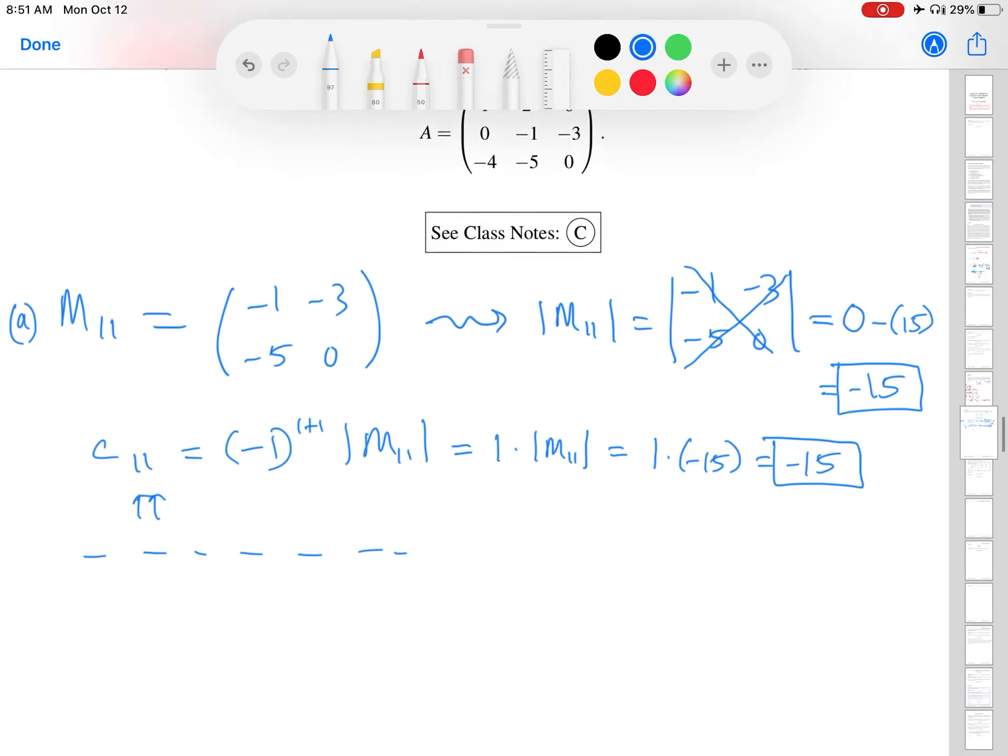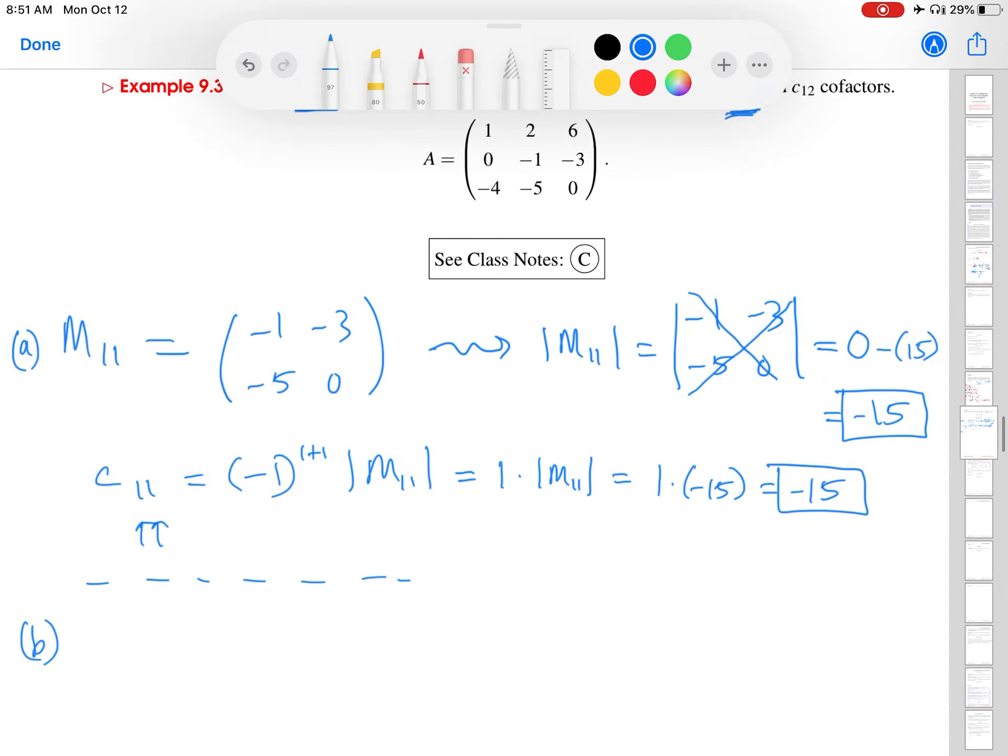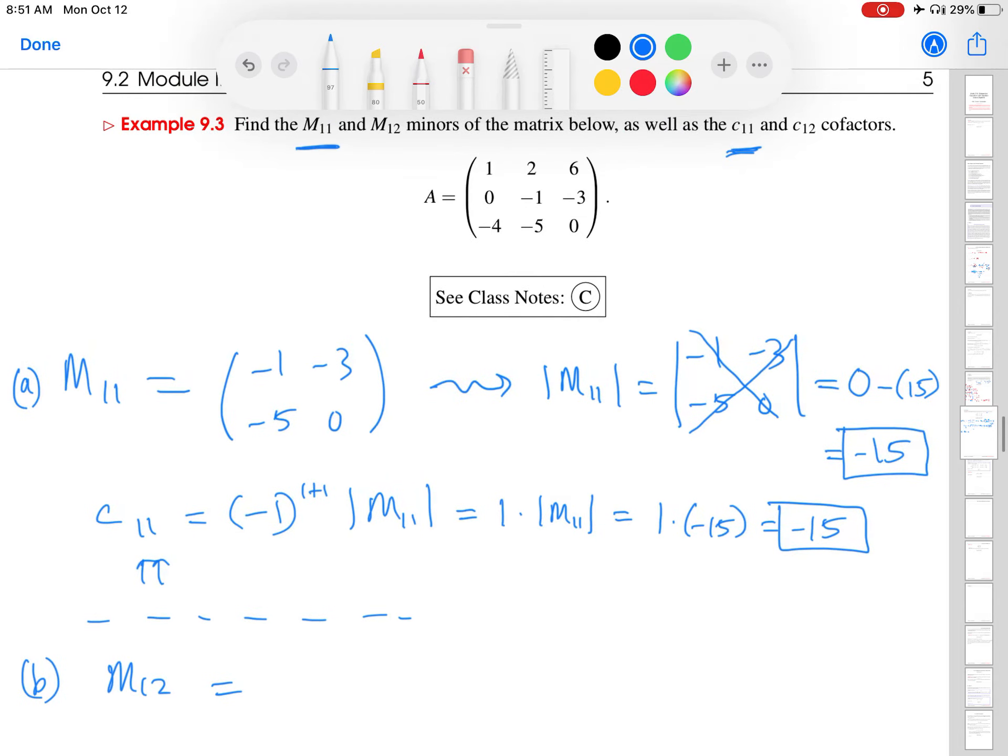And then I'll go down and do the same thing for M12. That's the last part of this example, M12. So I'm going to go up here to the matrix A. If I'm finding the M12 matrix, I'm deleting the first row and the second column. So what matrix am I left with? Reading it off, it's 0, minus 3, negative 4, 0. Great.